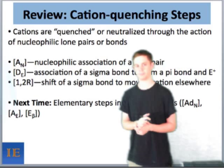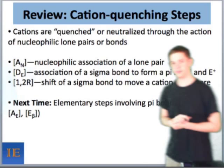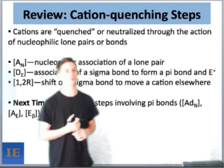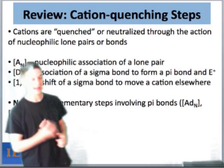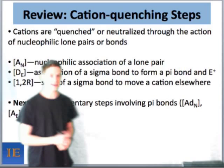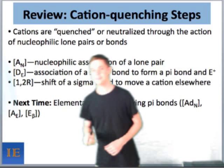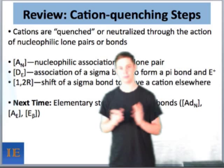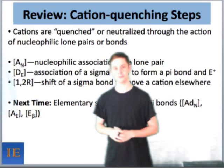Next time, we're going to take a look in more detail at steps that involve pi bonds. These are very common — the carbonyl group, which is a pi bond between carbon and oxygen, is one of the most common functional groups in all of organic chemistry. The ADN and E-beta steps will be very important in the chemistry of carbonyls. We'll also look at the AE step in more detail — which we saw briefly in the context of the Prins reaction — and that's essentially a double bond acting as a nucleophile. Thanks for joining me today, and I'll see you next time.